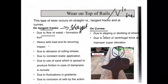On curves, the causes of rail wear are quite different from tangent tracks. Free slipping and skidding of wheels on curves leads to wear. Additionally, if improper superelevation is provided, the effect of centrifugal force causes the load on one rail to be greater than the other, resulting in more wear due to heavy concentration of stresses.